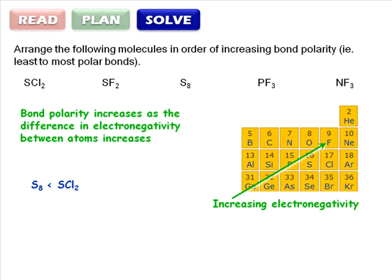Then we're left with three fluorine containing compounds: SF2, PF3, and NF3. Sulfur is closer to fluorine than nitrogen or phosphorus, so SF2 is next.